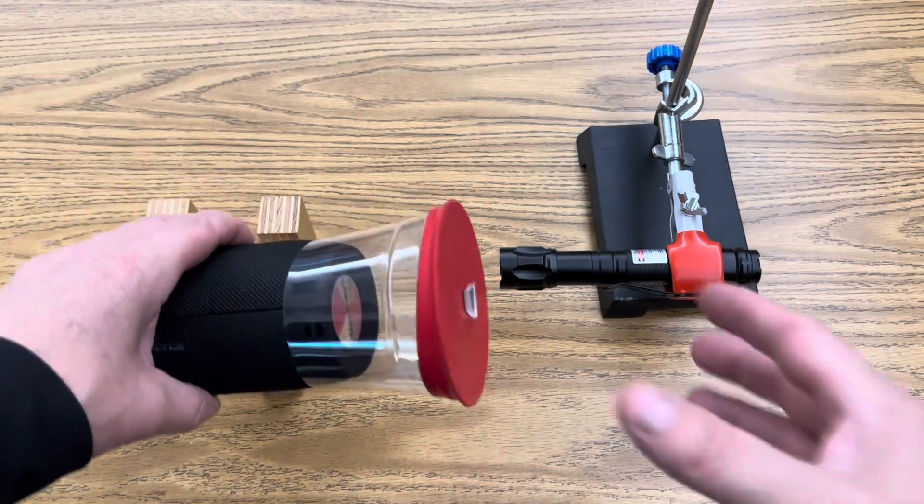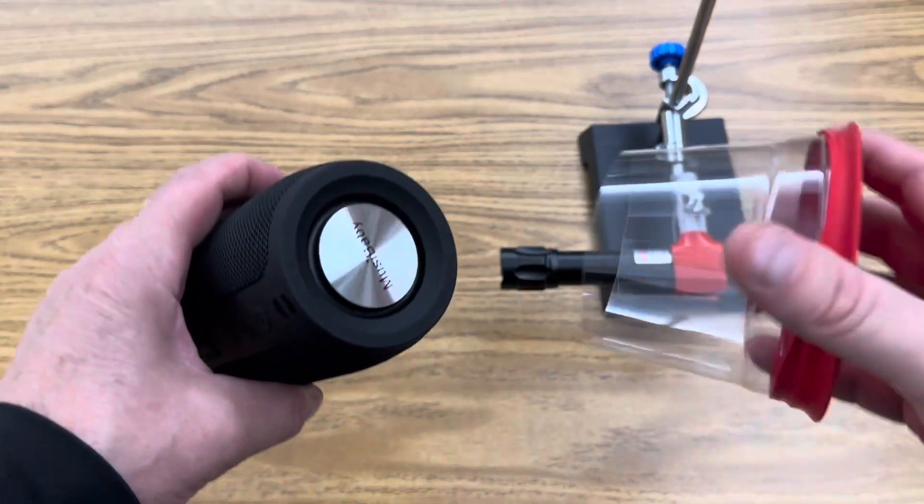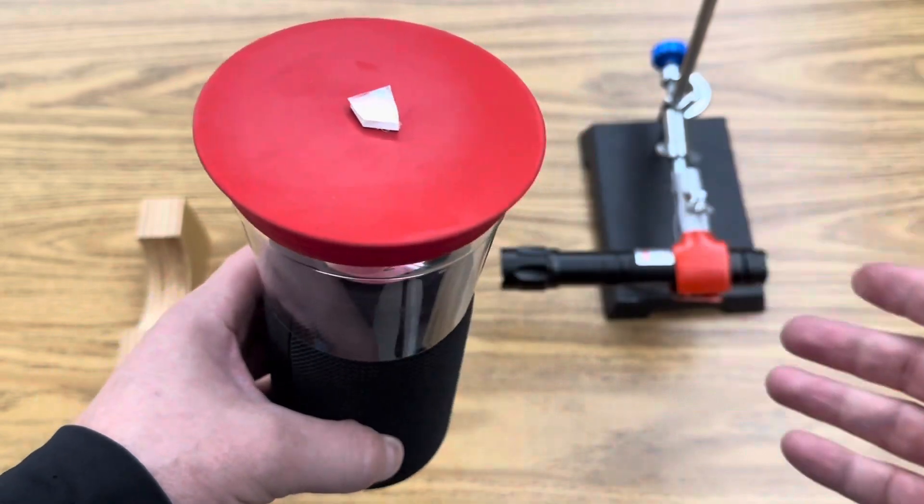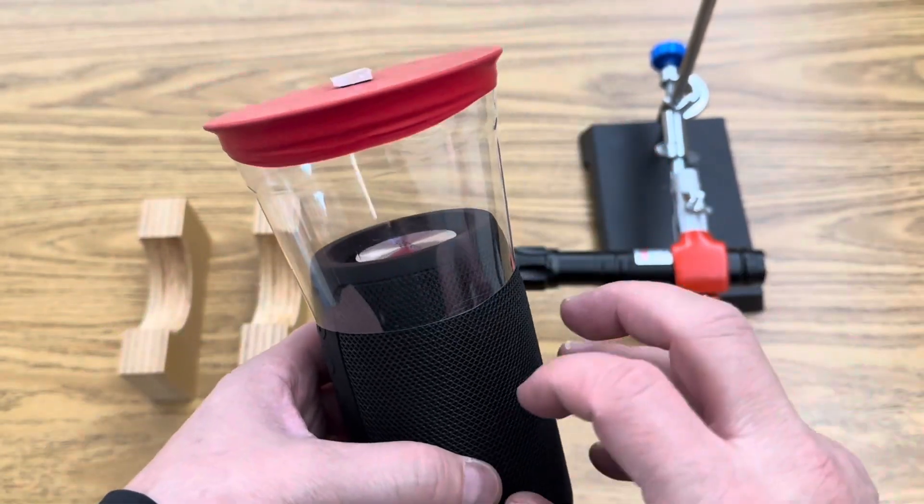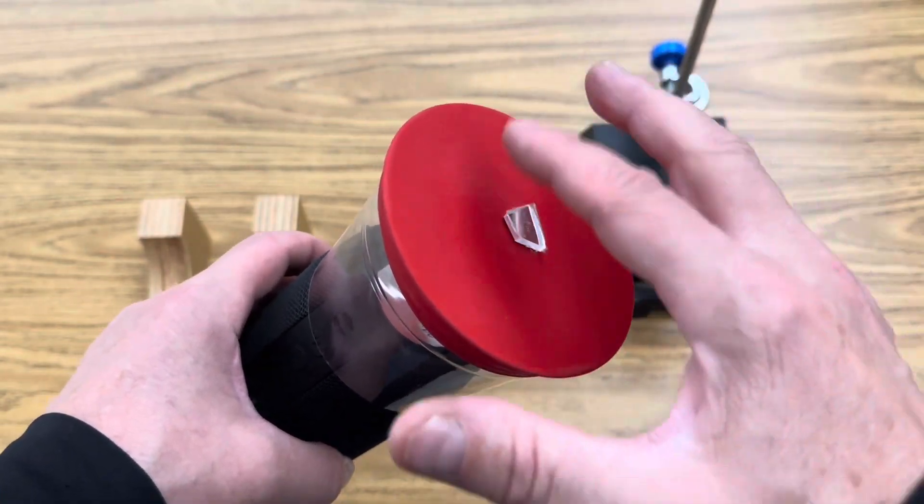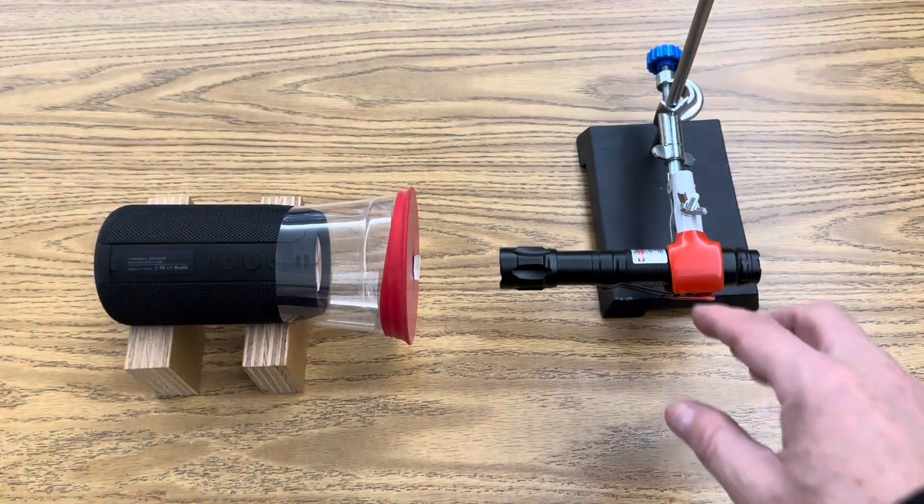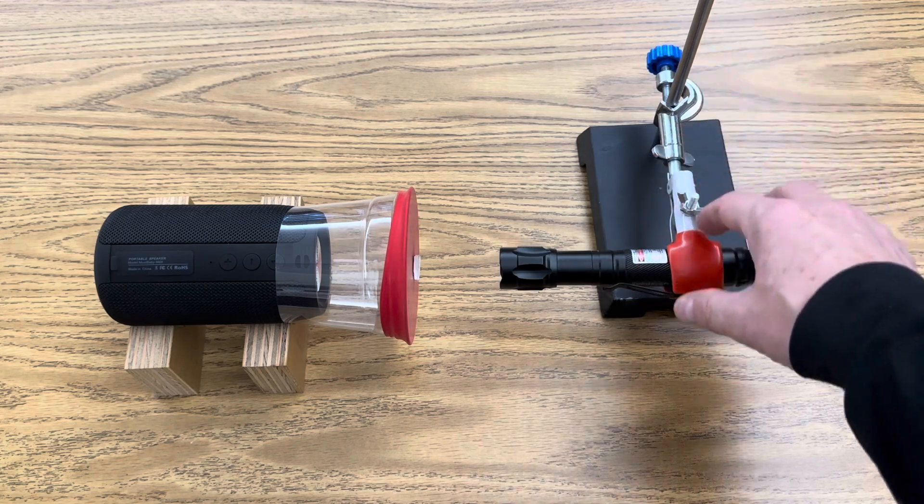Okay, now you're ready to take your cup and just slide it over the top of your Bluetooth speaker. So it stays on there. So when the speaker vibrates, it causes the diaphragm, the balloon diaphragm on the cup to vibrate. And then I'm going to aim that at my laser pointer that I have mounted to the stand.